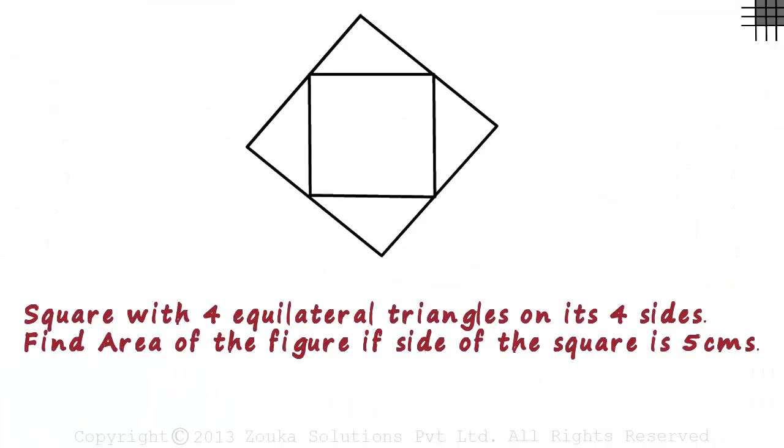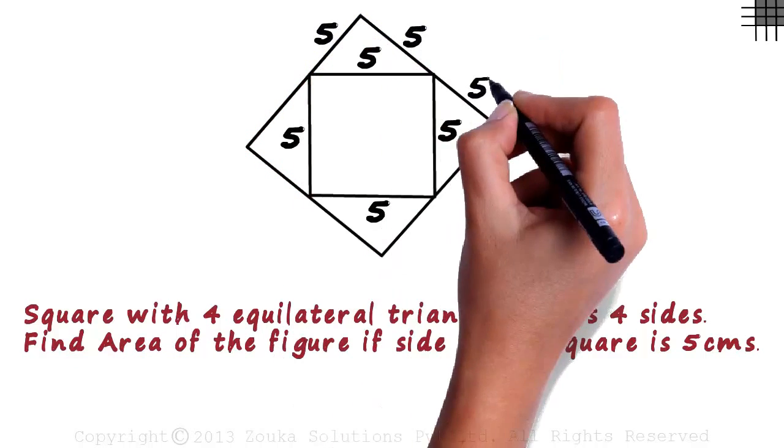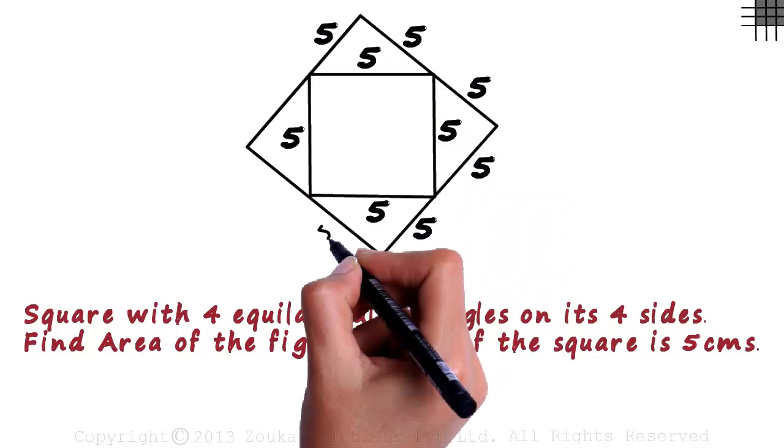Now let's consider the same figure we saw in the earlier video. We have four equilateral triangles on the four sides of the square in between. The side of the square is given as 5 centimeters. In this example though, we have to find the area of the figure. Since all the triangles are equilateral, the lengths of their sides will be 5 centimeters. So we mark the lengths of the triangles as 5 centimeters.